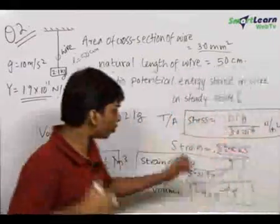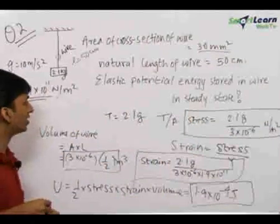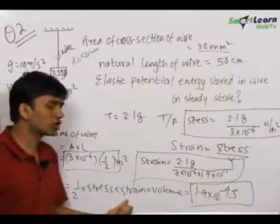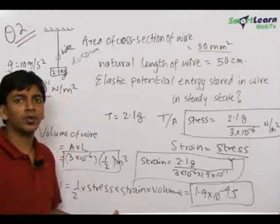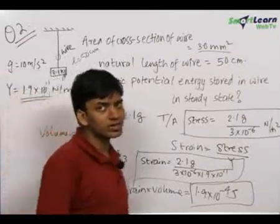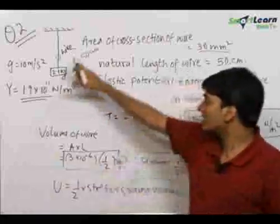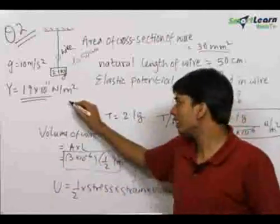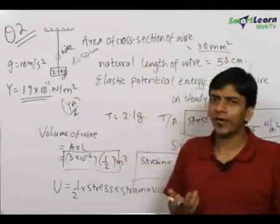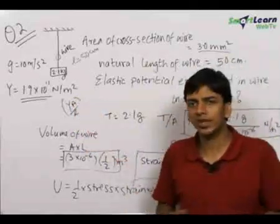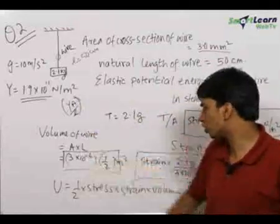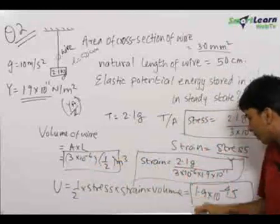The important thing to remember from this question is that there are various formulas for the elastic potential energy stored in a wire: ½ × stress × strain × volume, or treat the wire as a spring of spring constant YA/L and use ½kx². This spring concept can also be used for finding forces and tension in the wire. The final answer is 1.9 × 10⁻⁴ joules.